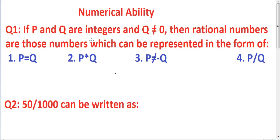Question: If P and Q are integers and Q is not equal to 0, then rational numbers are those numbers which can be represented in the form of — solution: P and Q are integers, Q is not equal to 0, then the form of the rational number is P by Q. Therefore, the answer is the fourth one, that is P by Q.